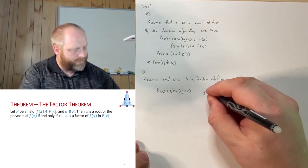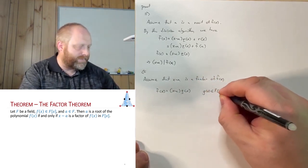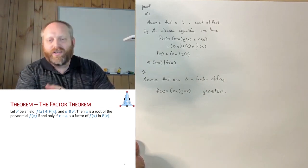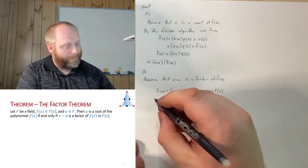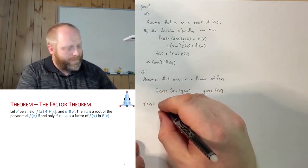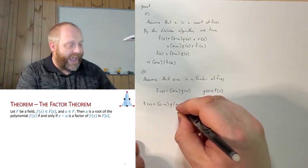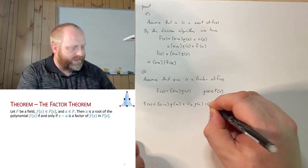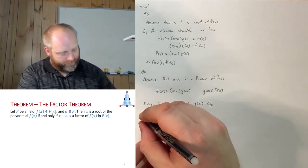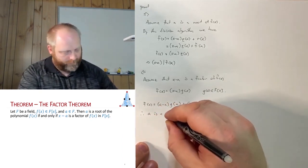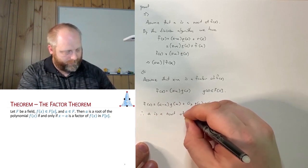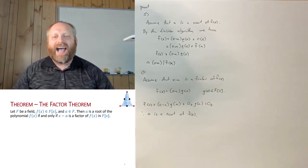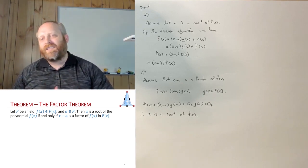Here g(x) is an element of f[x]. To show a is a root, we substitute a: f(a) equals (a minus a)·g(a), and a minus a is just the zero element, so f(a) equals zero. Thus a is in fact a root, and that completes the proof. So: if a is a root then x minus a is a factor, and if x minus a is a factor then a is a root.